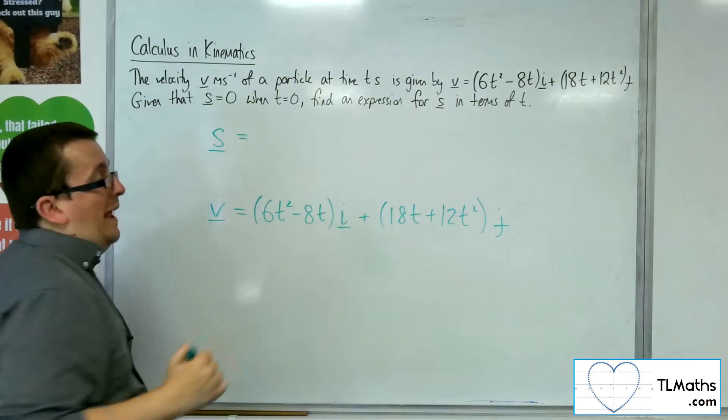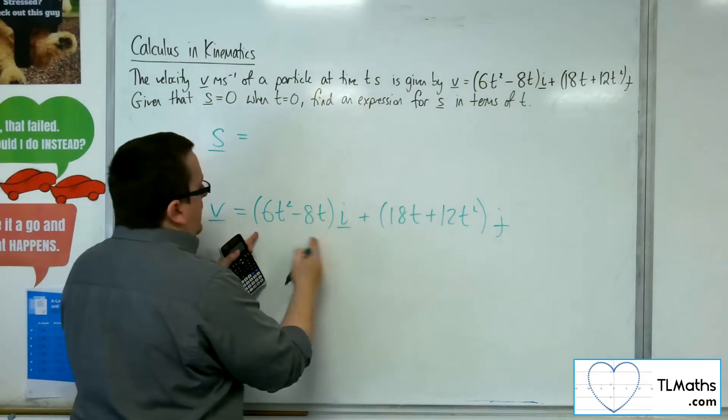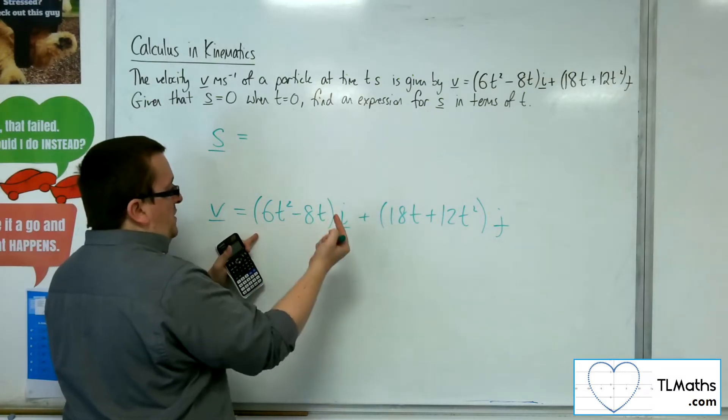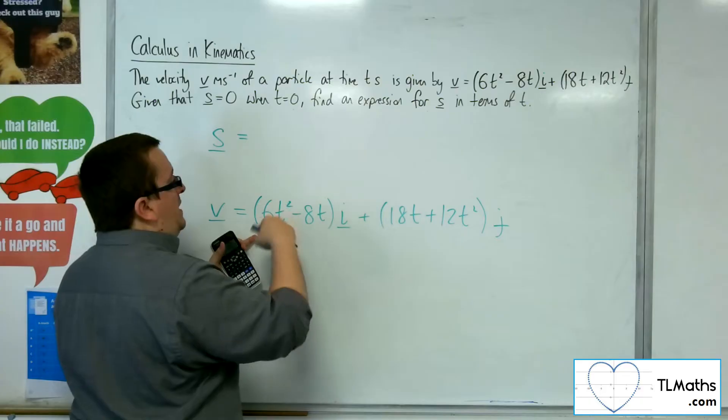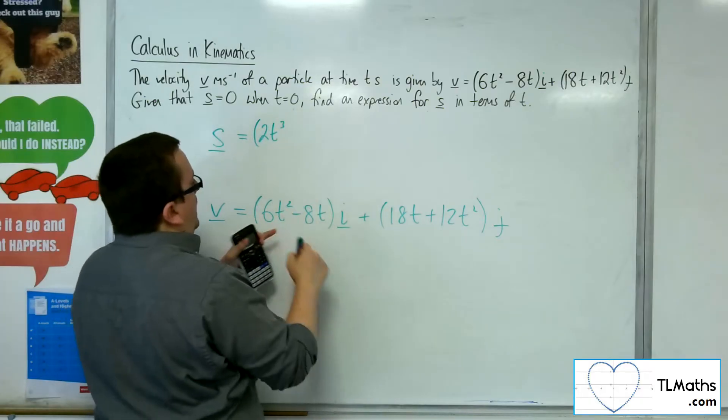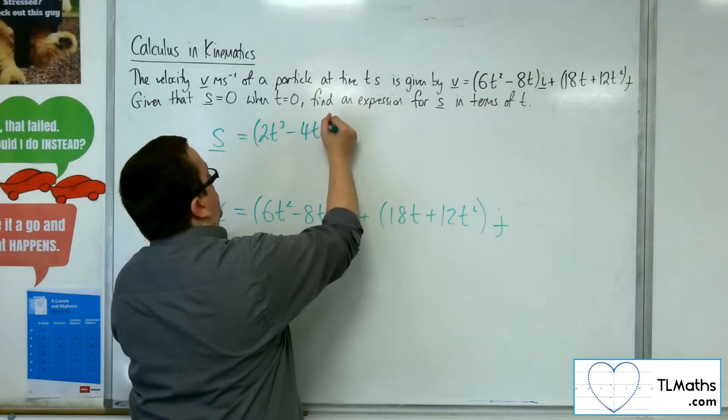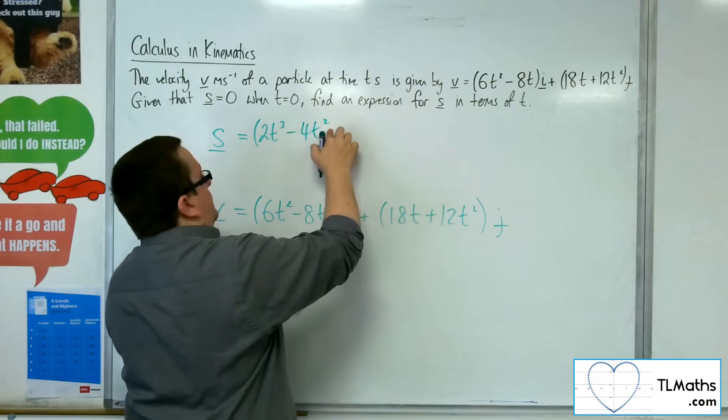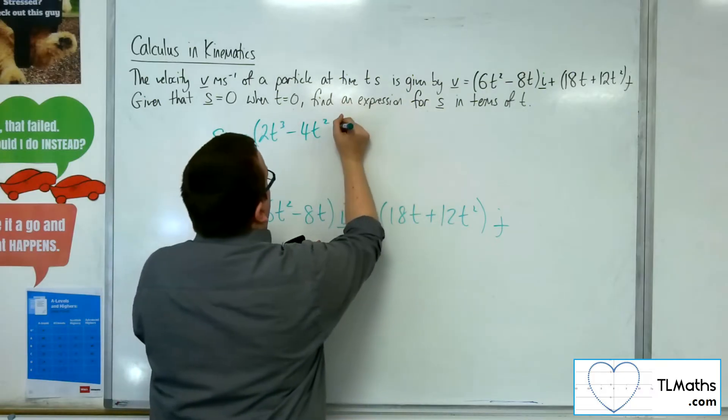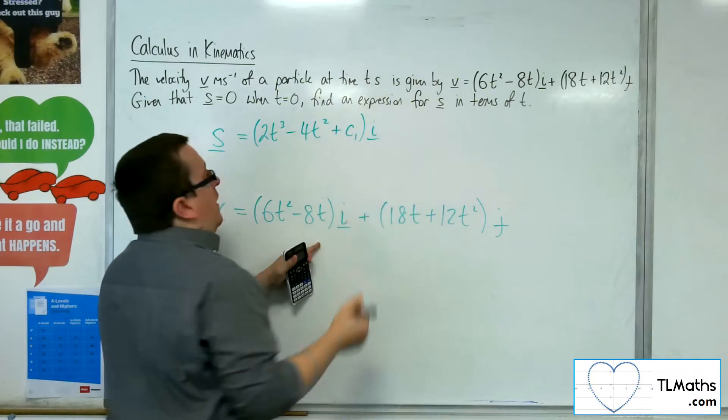Now, in order to get to s, I'm going to need to integrate. So I'm going to integrate the i component. 6t squared, add 1 to the power, divide by the new power, gets me to 2t cubed. Minus 8t, add 1 to the power, divide by the new power, gets me to minus 4t squared. Oh, got ahead of myself. Plus some constant, c1, i.